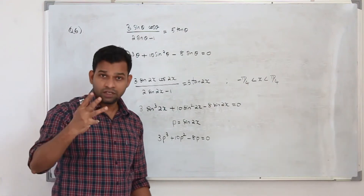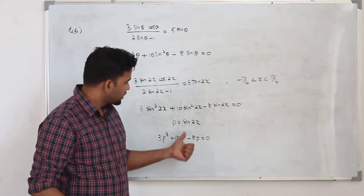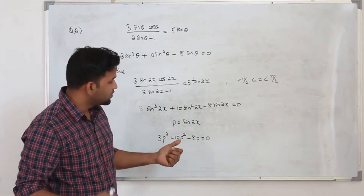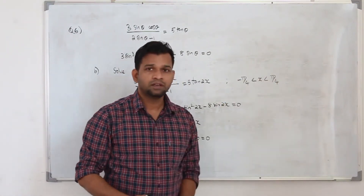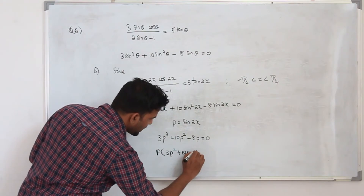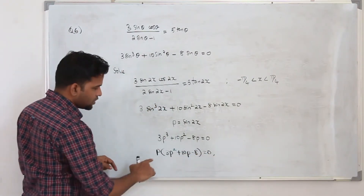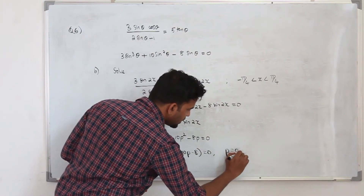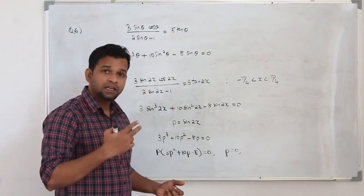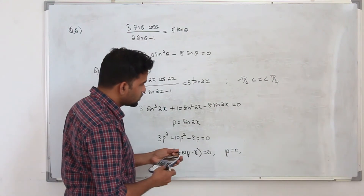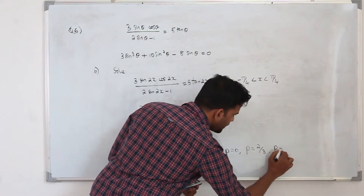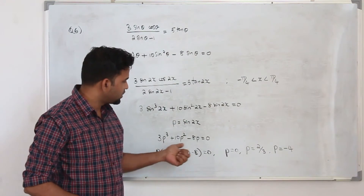When you solve this, you get 3 solutions. Taking p as a common factor: p(3p² + 10p − 8) = 0. So p = 0 is one solution. Solving the quadratic 3p² + 10p − 8 = 0 gives two more p values: p = 2/3 and p = −4. So we have three solutions for p.